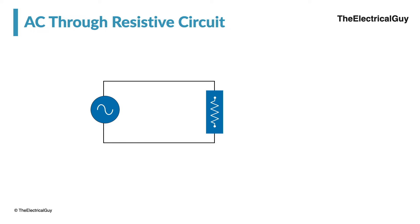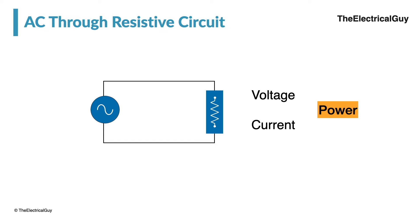When we apply AC supply to a resistive circuit, how does the voltage and current behave? And the most important part — what about the power situation in case of an AC circuit having a resistor? In this video we are going to discuss all of this in the easiest way possible, so if you are interested, watch the video.